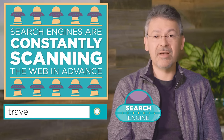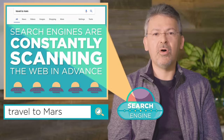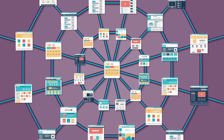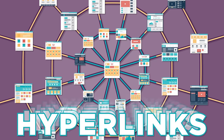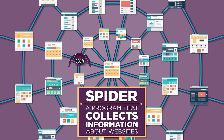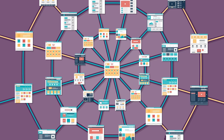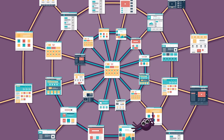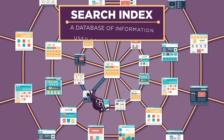That way, when you search about travel to Mars, the search engine already has what it needs to give you an answer in real time. The internet is a web of pages connected to each other by hyperlinks. Search engines are constantly running a program called a spider that crawls through these web pages to collect information about them. Each time it finds a hyperlink, it follows it until it has visited every page it can find on the entire internet. For each page the spider visits, it records any information it might need for a search by adding it to a special database called a search index.